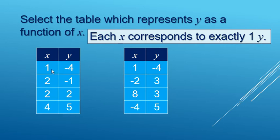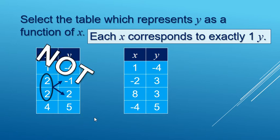So let's look at this table on the left. One goes to negative four, two goes to negative one, and two goes to two. We got one x going to two y's, or one input going to two outputs - not a function.